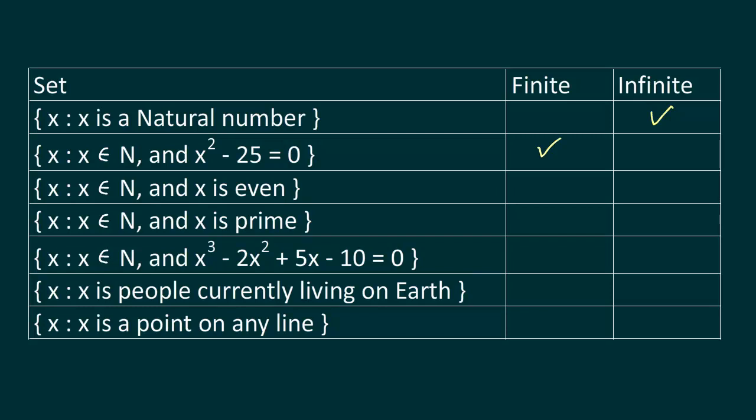What about the third one? x belongs to natural numbers and x is even. This set will look something like this: it will contain 2, 4, 6, 8, and so on. So this is an example of an infinite set.